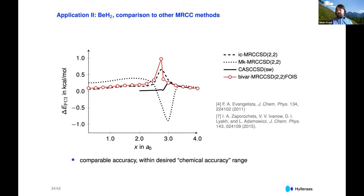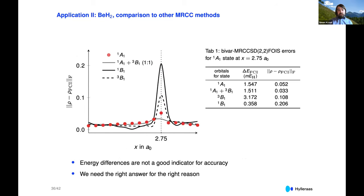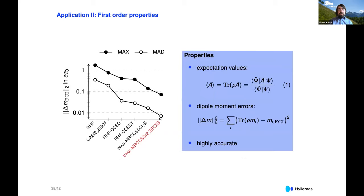We did a comparison with other multi-reference-type methods, and the accuracies are similar. More sophisticated genuine methods also have trouble in the multi-reference region. Finally, we computed dipole moment errors, and we see that as we go to higher levels of multi-reference theory, we get better and better results. So it seems our method is highly accurate with respect to properties as well.